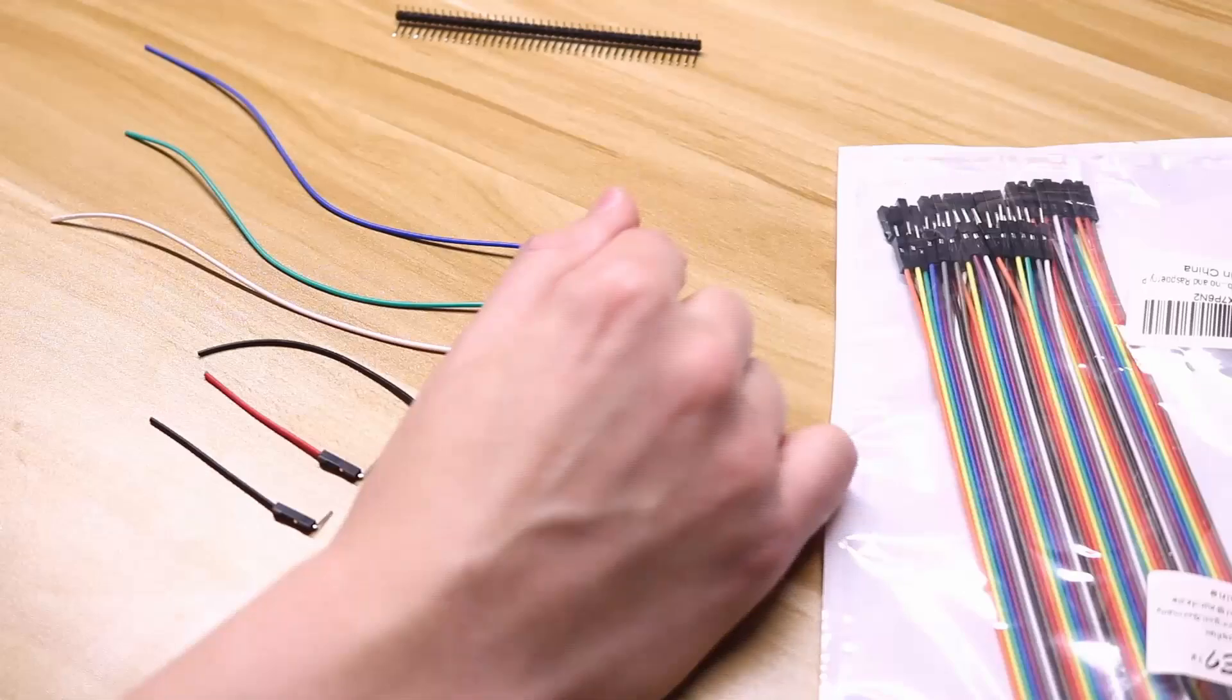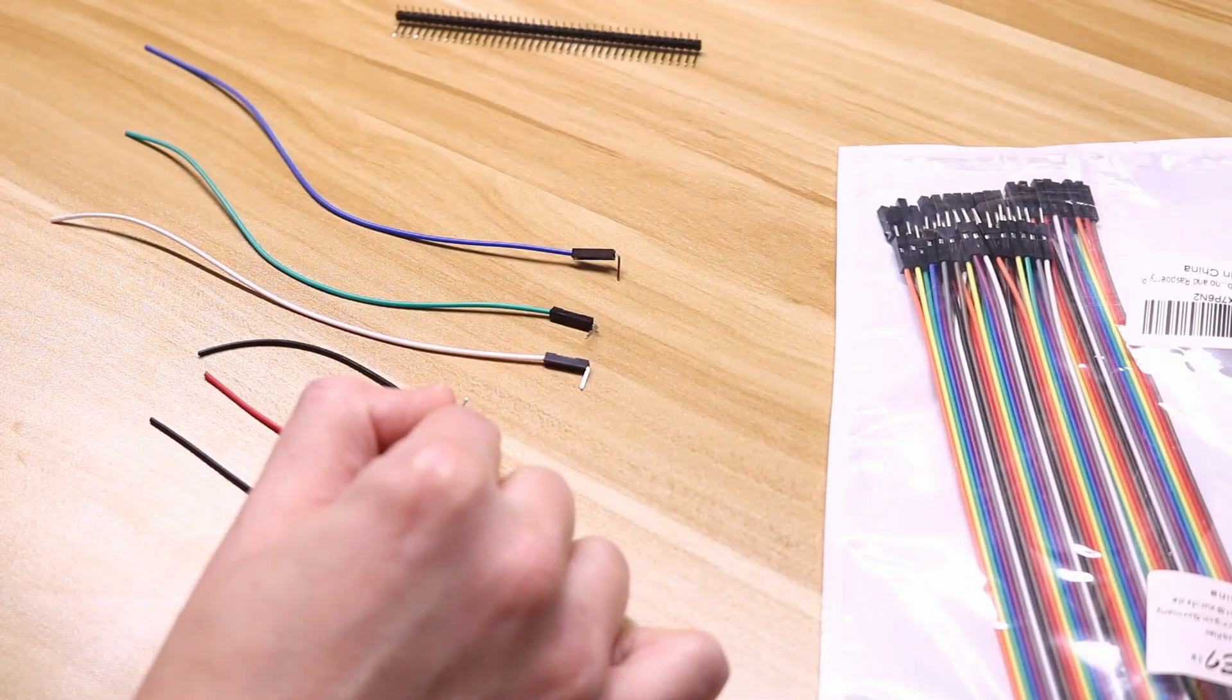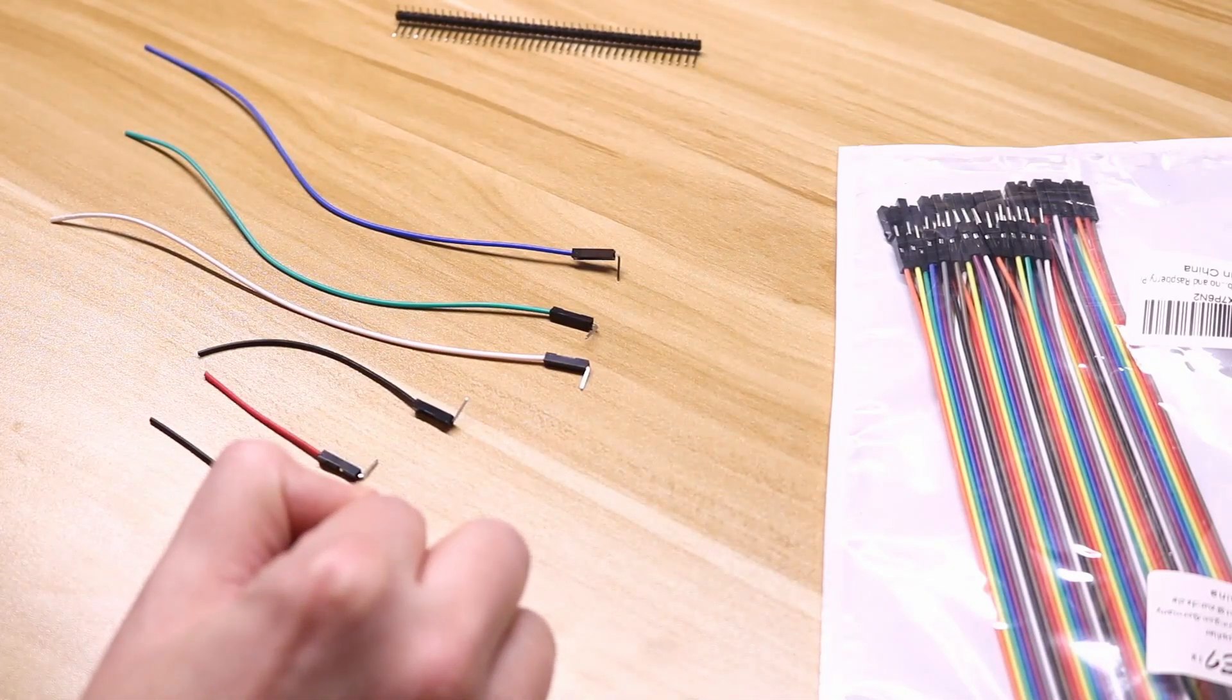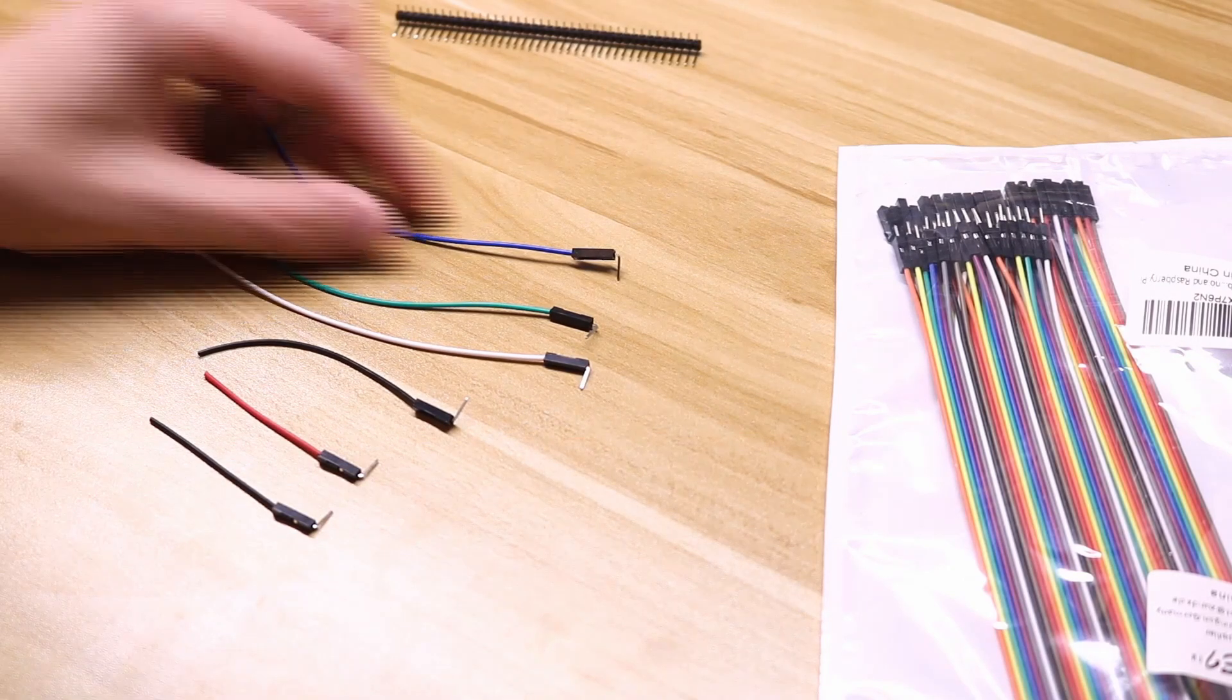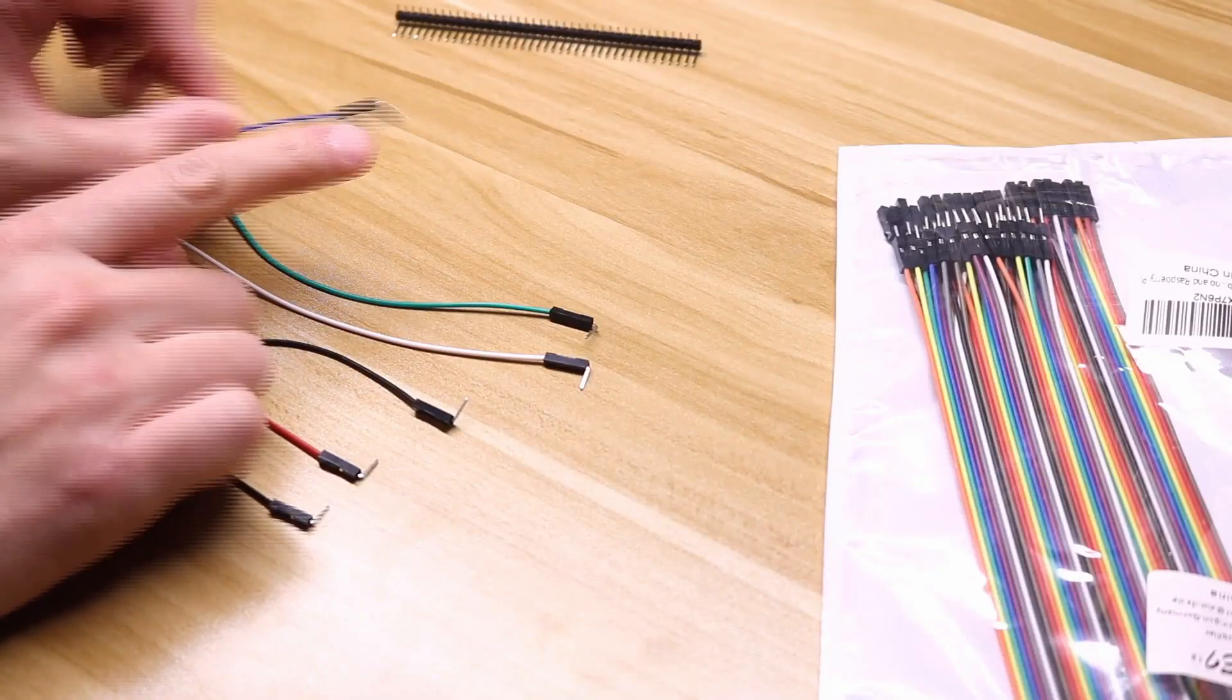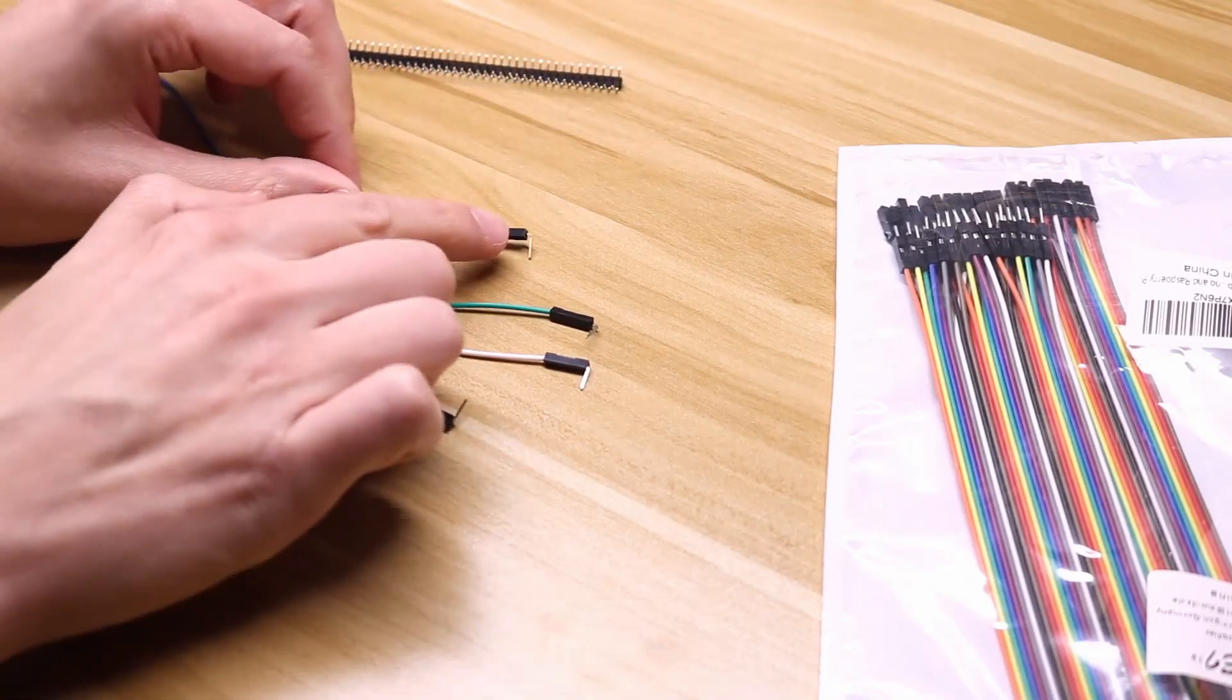The blue one's for the power button, green and white are for the data lines on the USB, black one for the power button, and the red and black down here for the USB connection. After I got done trimming them, I inserted a right angle adapter piece from my little selection over here into the ends on the female side.